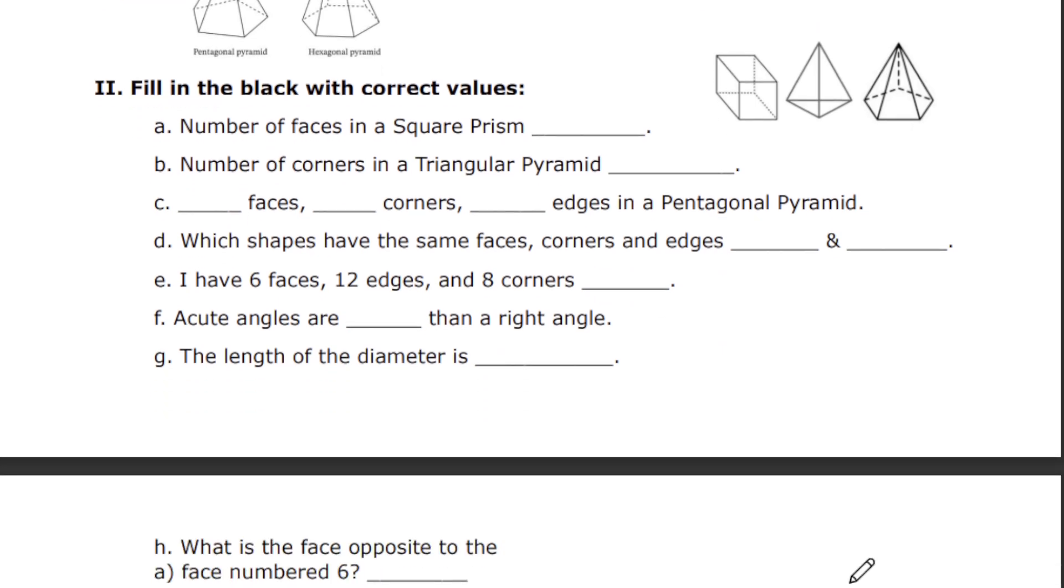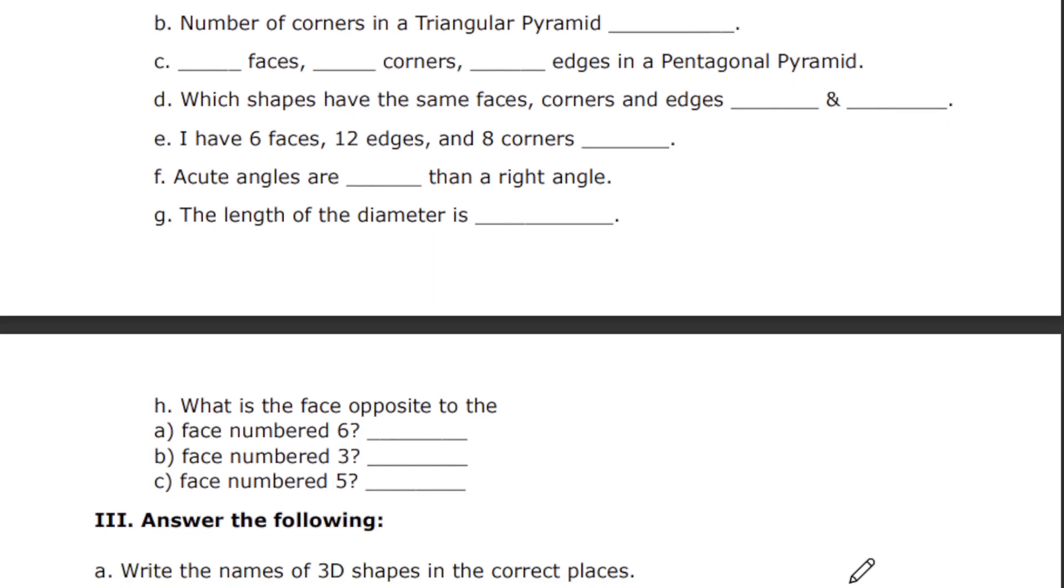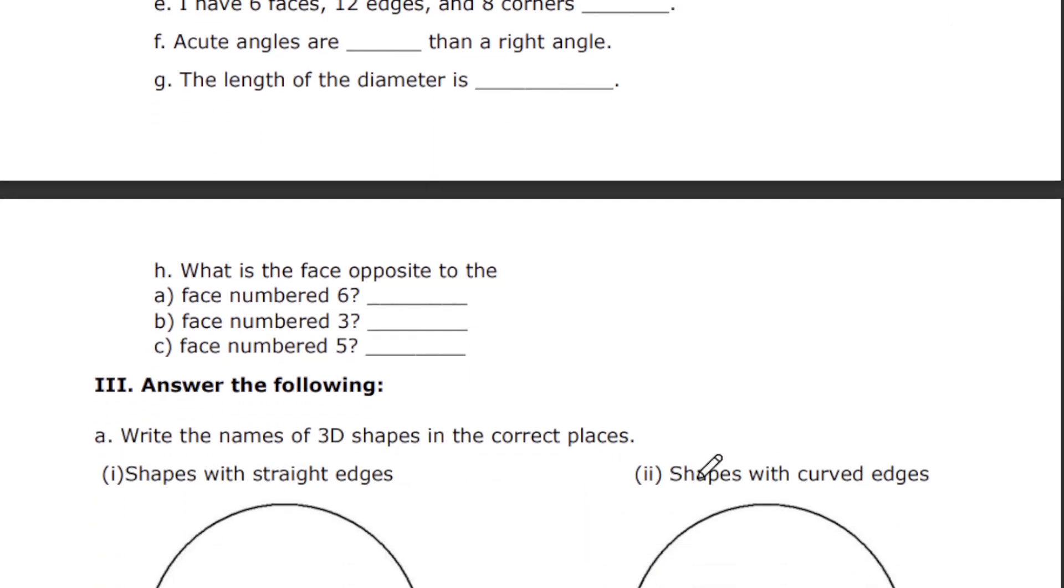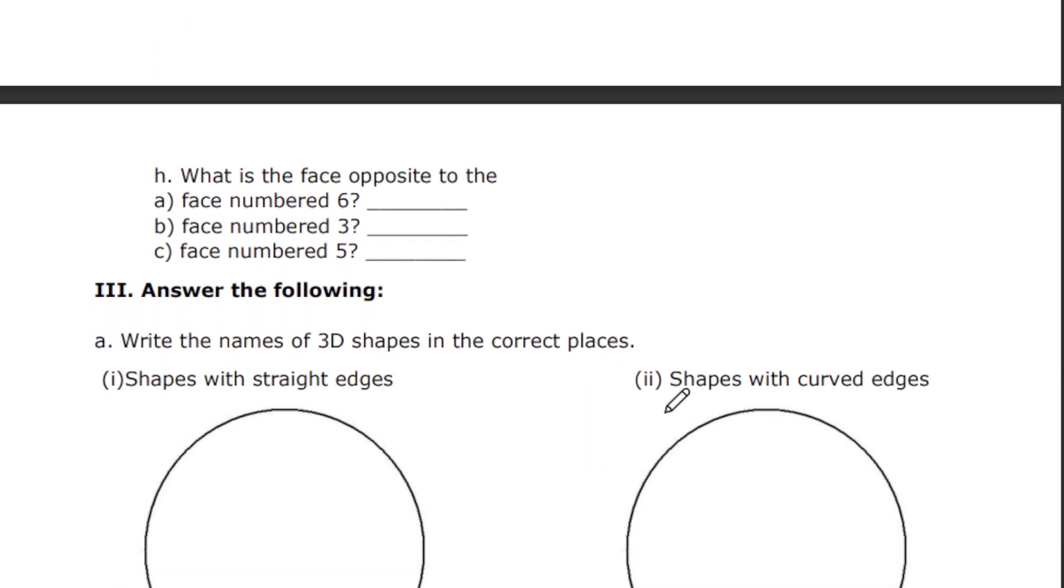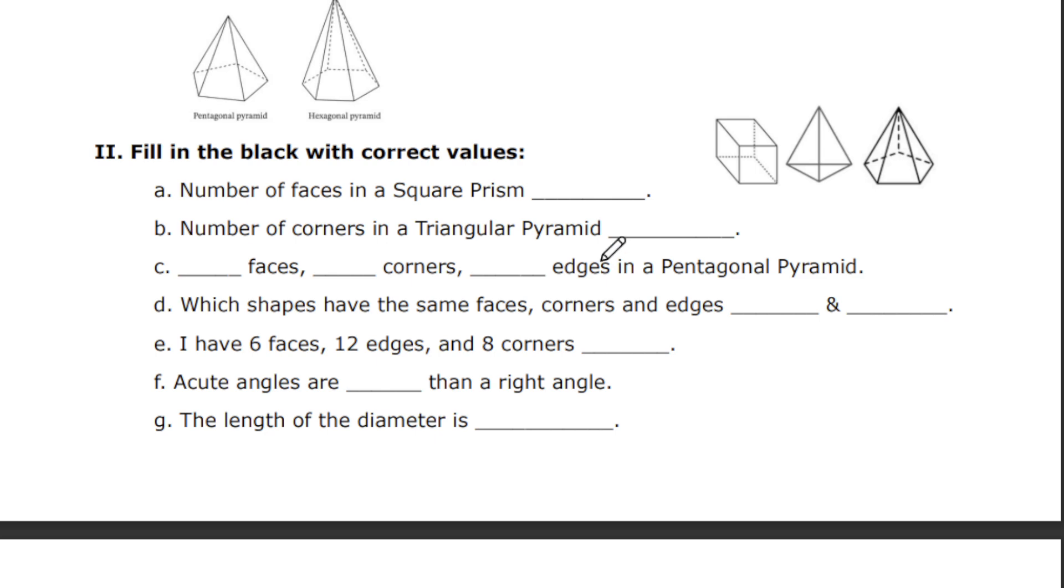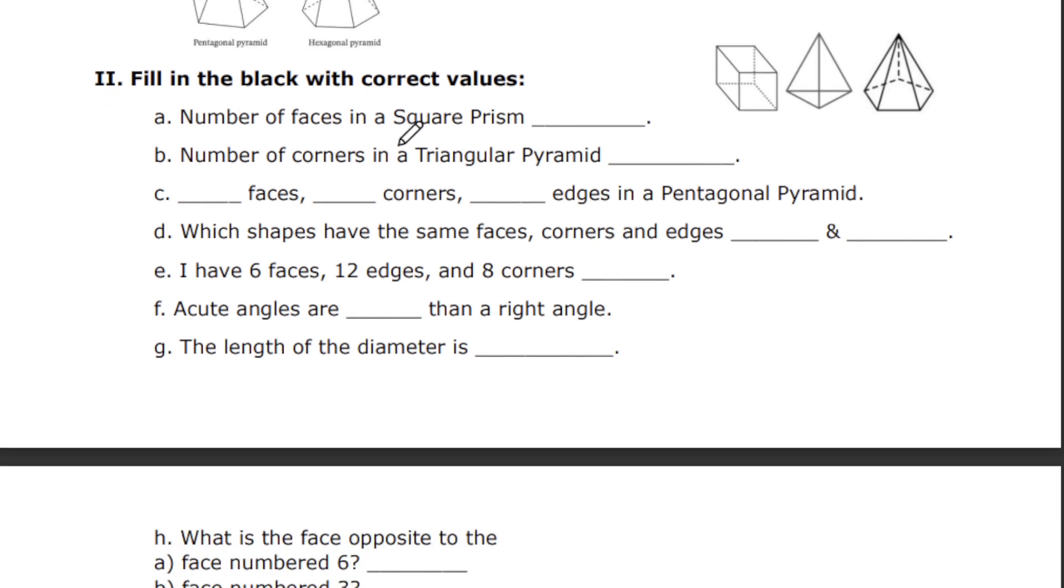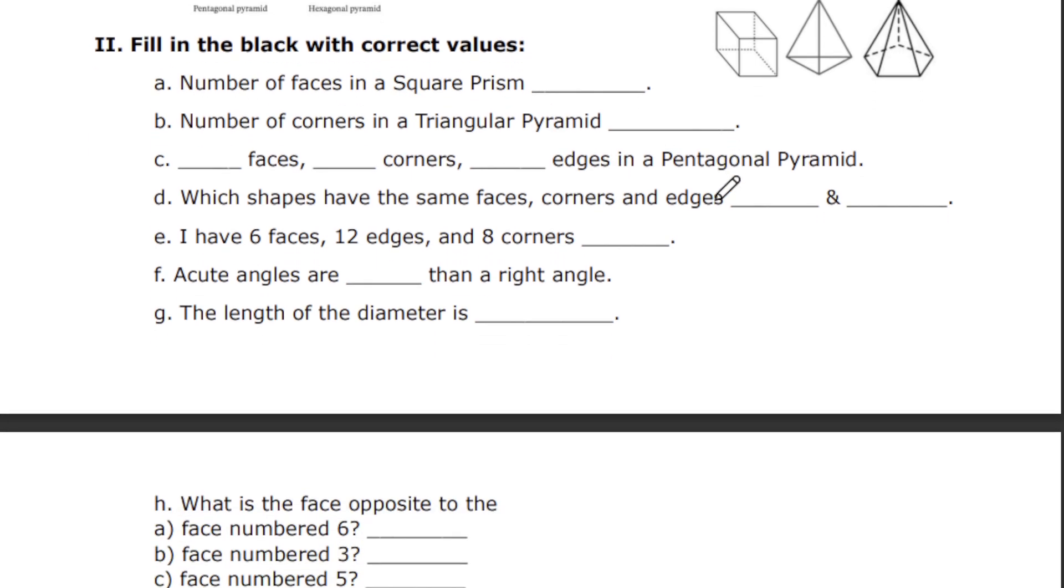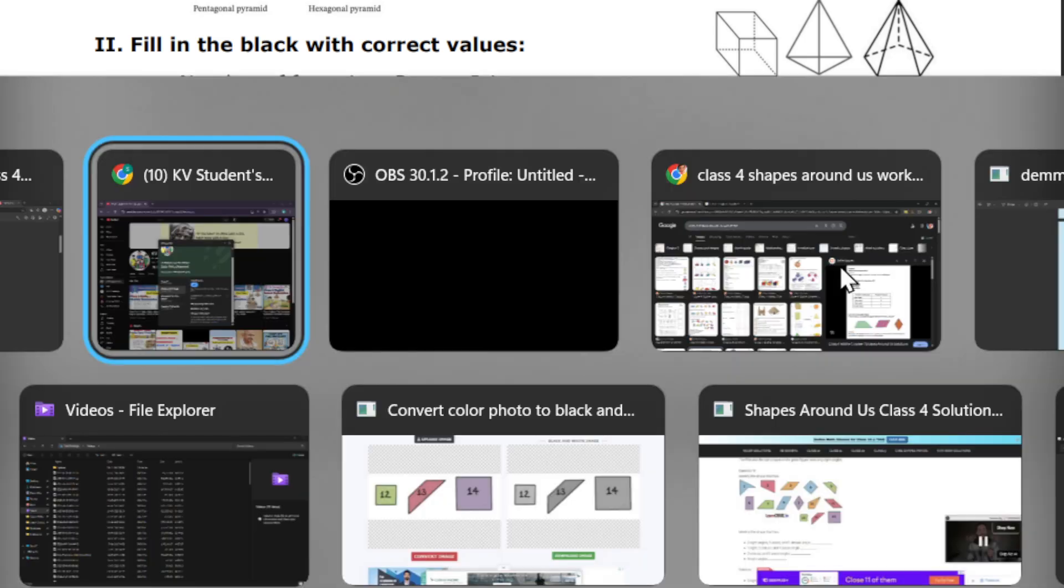Fill in the blanks with correct values. We have answered the following. In the fill in the blanks, we have covered number of faces in square prism, number of corners in triangle pyramid, how many faces, corners, and edges in a pentagonal pyramid. Which shape has the same faces, corners, and same edges? You have to write the answer in the given blank.